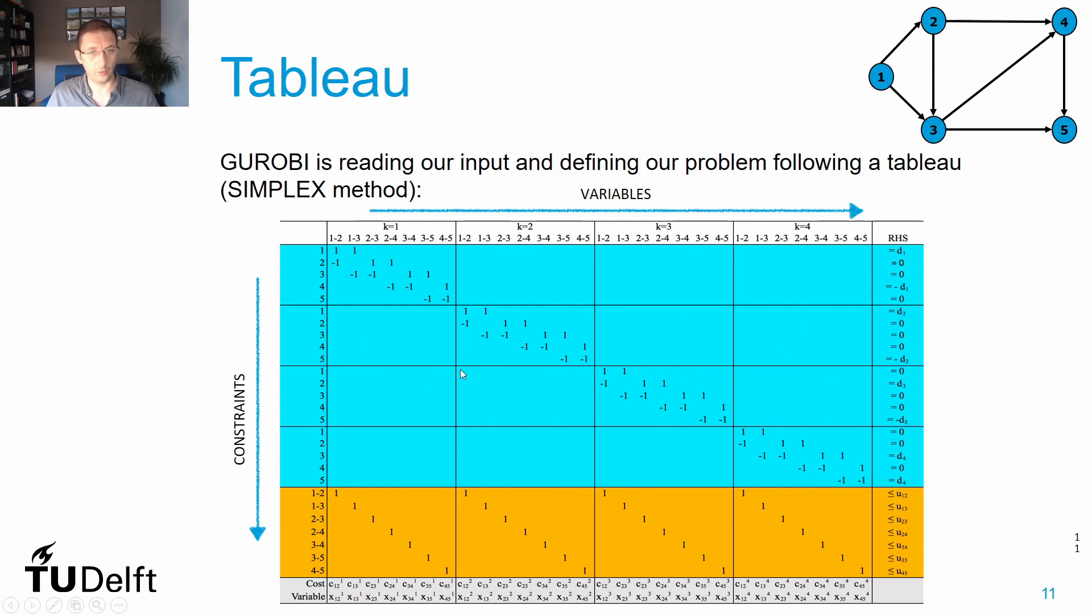You also have here constraints that regard the capacity. If you sum the flow in arc 1-2 for all the commodities, this needs to be lower or equal than the capacity that you have defined for that specific arc. So this is your mathematical model being formulated in a tableau, and this is what Gurobi uses to apply the simplex method that you probably remember from your operations research lectures.